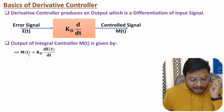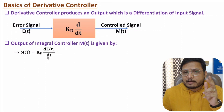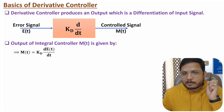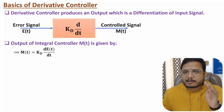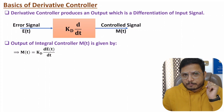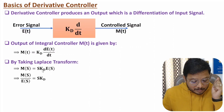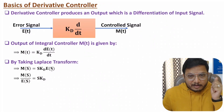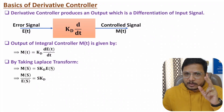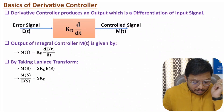We have the output in time domain, but usually we represent output in the frequency domain. To get the output in frequency domain, we apply the Laplace transform. Applying the Laplace transform with zero initial conditions: m(t) becomes M(s), the constant Kd remains, and single differentiation becomes s, so we get M(s) = Kd · s · E(s).